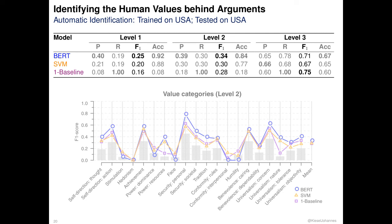For the lower levels, both BERT and SVM are able to beat the baseline, which we see as a clear sign that automatic identification of values is possible, even though much work needs to be done in terms of effectiveness. But the two approaches could not beat the baseline for level 3, which we would like to investigate in the future by taking a closer look at the propagated labels. Of course, you will find much more detail, like performance for each value, in the paper.